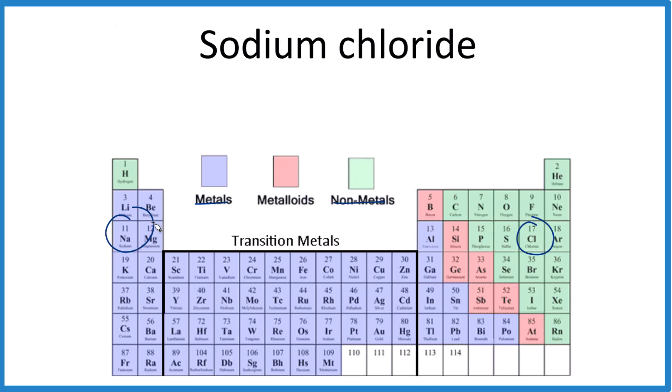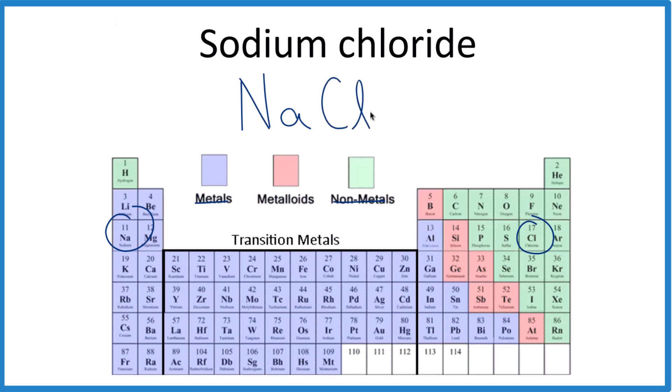For right now, let's write sodium, that's Na, and for the chloride, that's chlorine, that's Cl. But remember, this is an ionic compound, we have a metal and a non-metal, we've got to check those charges.